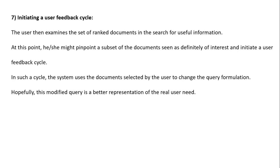Step 7 is initiating a user feedback cycle. The user examines the set of ranked documents for useful information. The user may find some documents relevant, clicks on them, and those become the relevant documents. The system uses the documents selected by the user to change the query formulation. This modified query is a better representation of the real user need. This happens cognitively and is not initiated to the user directly.